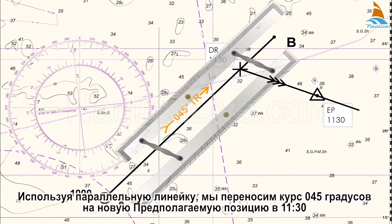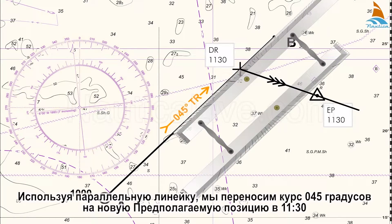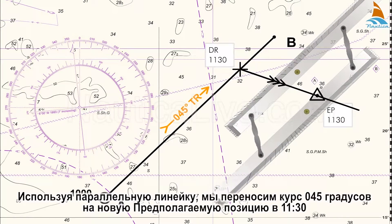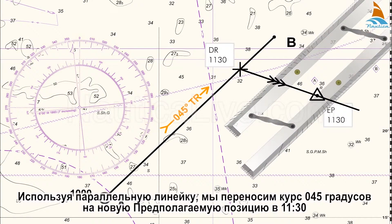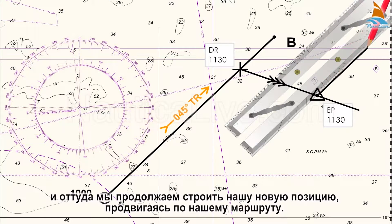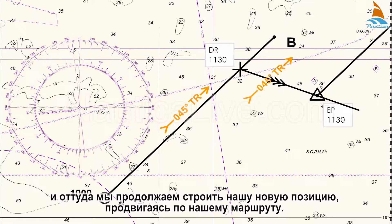Using the parallel ruler, we transfer the 045 degrees course to the new 1130 estimated position, and from there we continue to plot our new positions as we progress on our route.